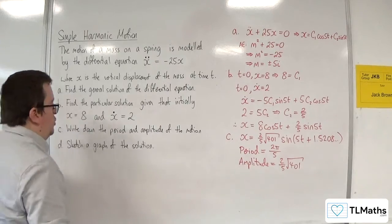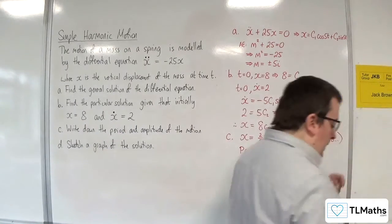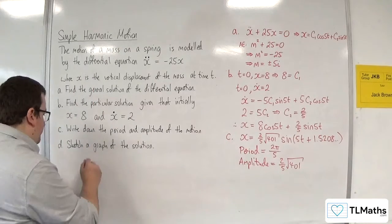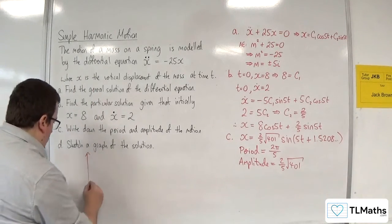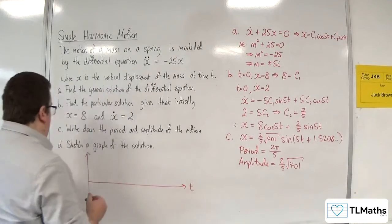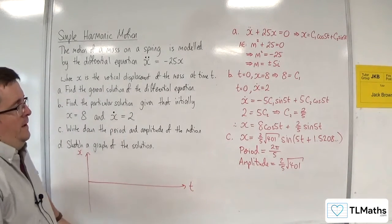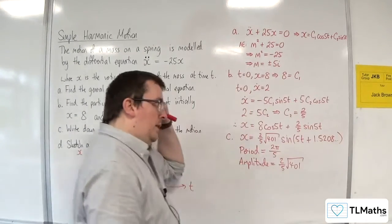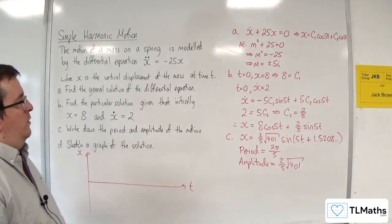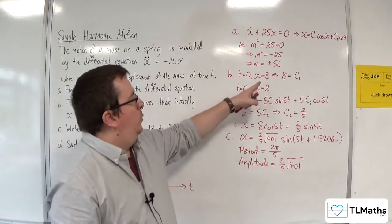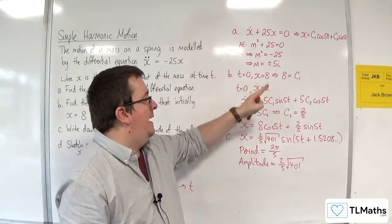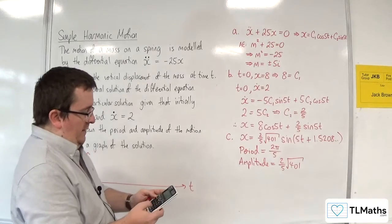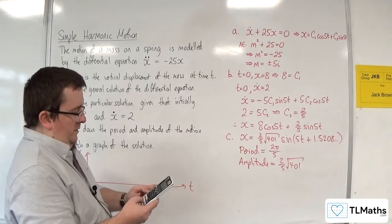Now sketch a graph of the solution. Now of course, this is easier when you've got a graphical calculator. But we're going to give it a go. Here's t and here's x. Now the first thing to note is you probably want an idea of where you're starting. So when t is 0, remember, x is equal to 8. That's what we had up here. So when I substitute t as 0 into this, I should get 8. And you can check that if you want. Nice little check.